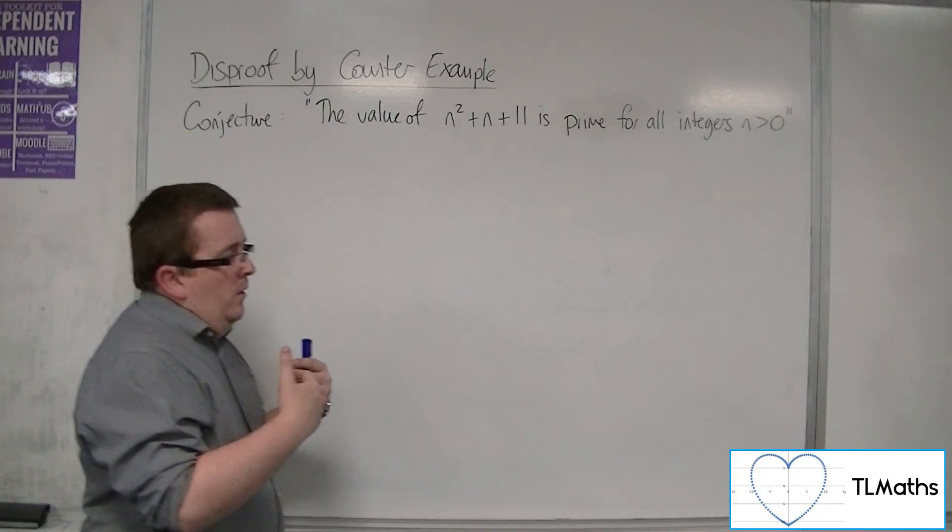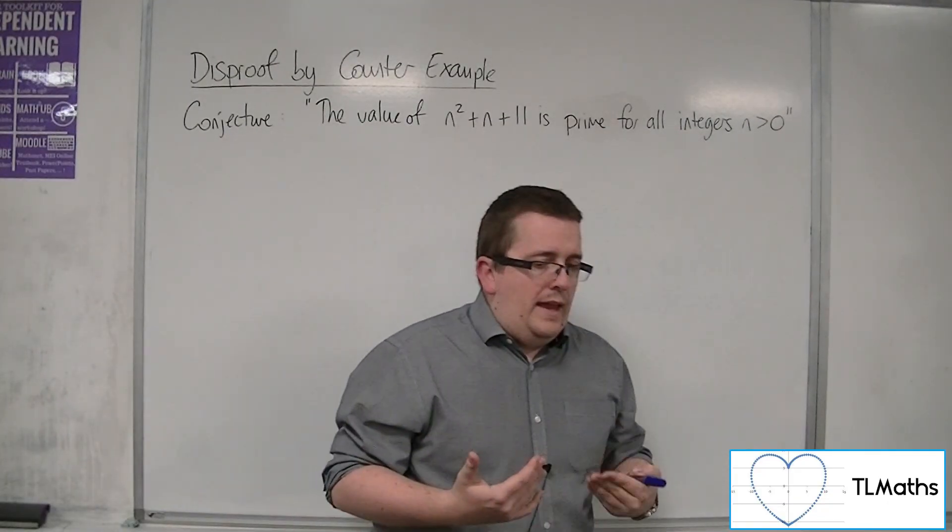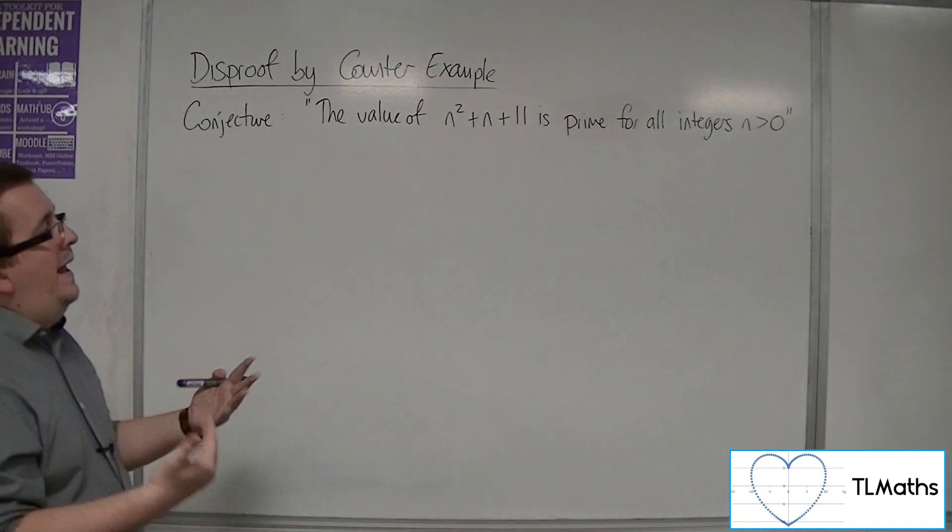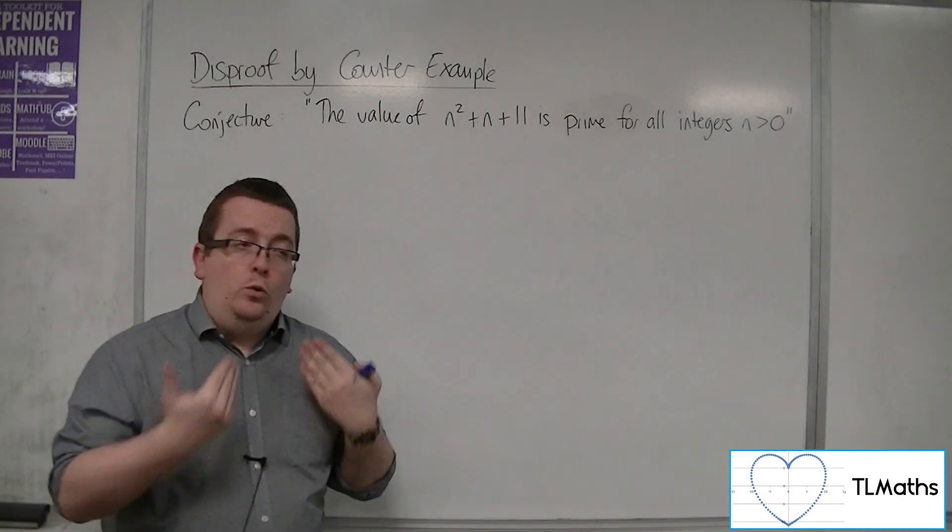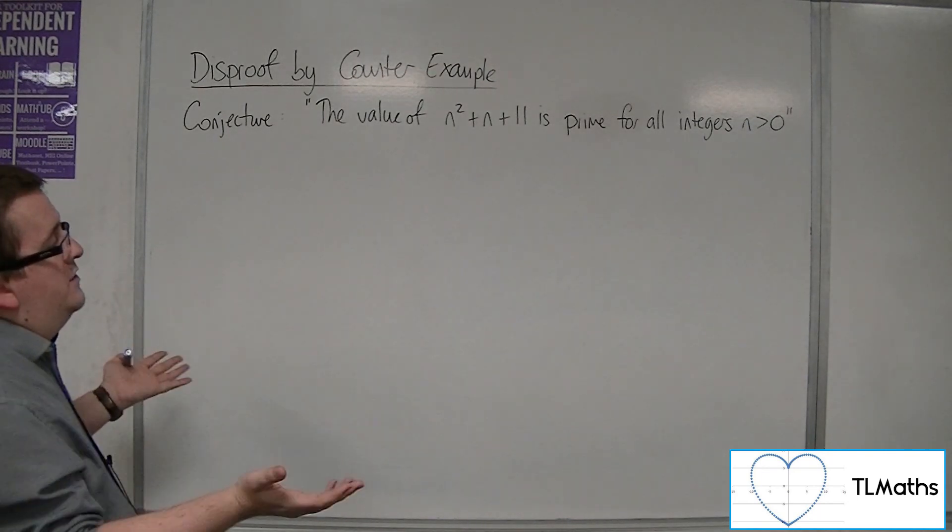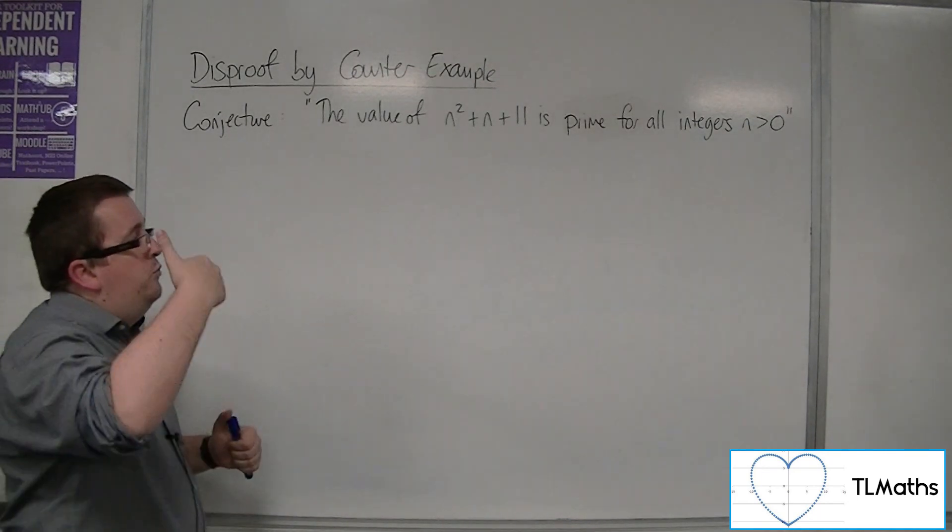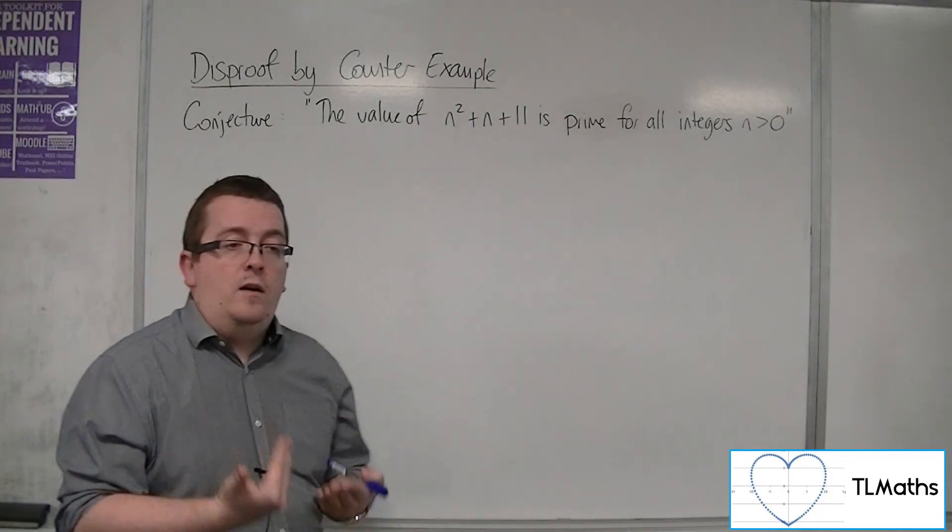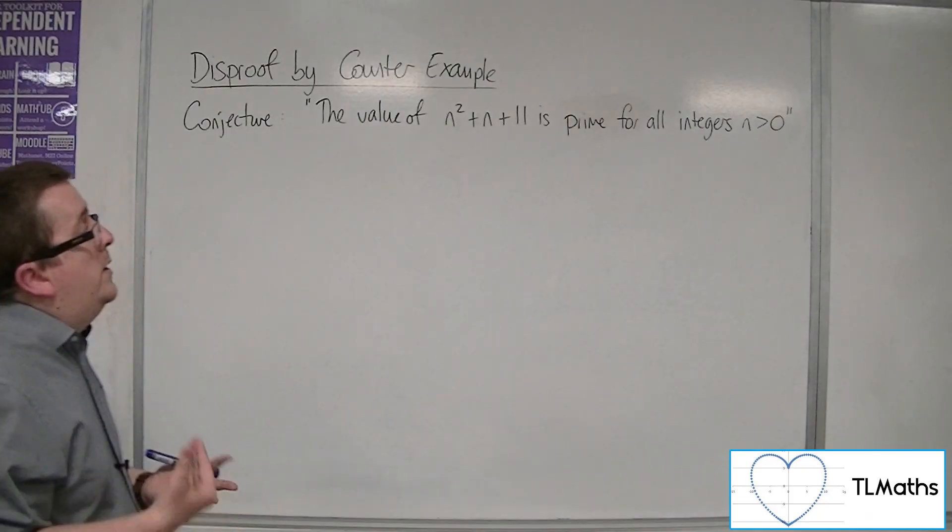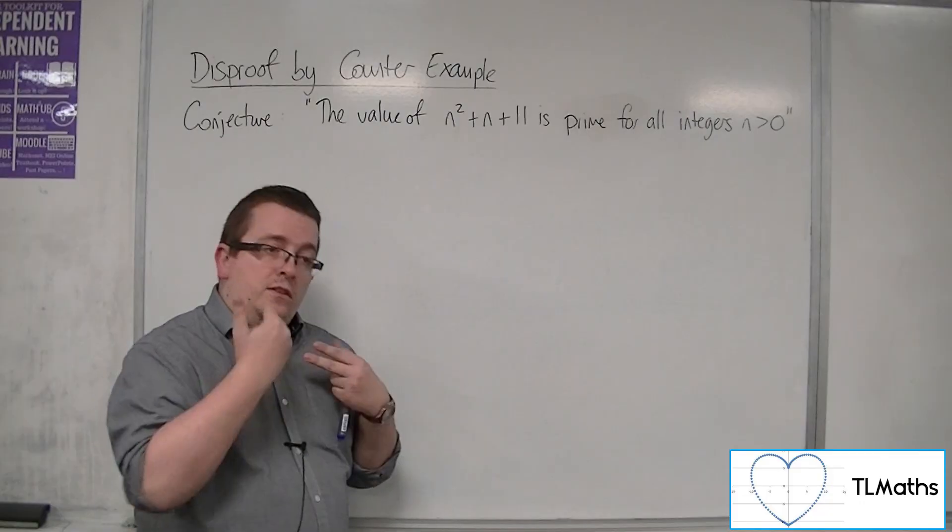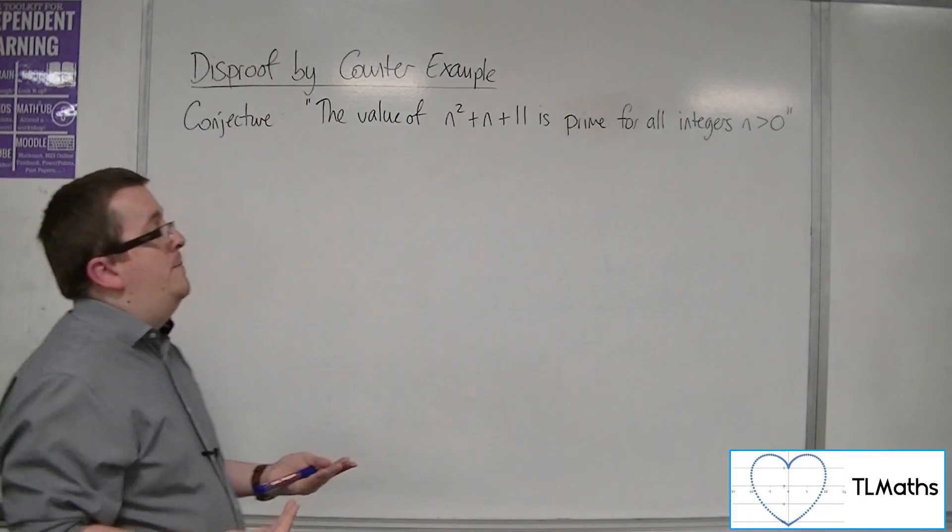So what I could do is I could work through all integers n greater than 0 and progressively just tick them off to see if the numbers that I get are prime. So I would try n is 1, n is 2, n is 3 and keep checking to see whether the number I get is prime.